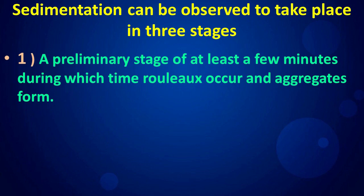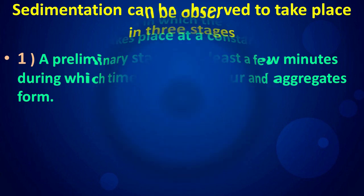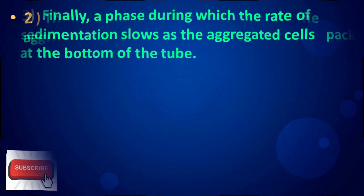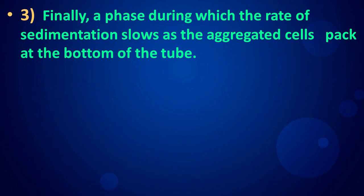Sedimentation can be observed to take place in three stages: a preliminary stage of at least a few minutes during which rouleaux occur and aggregates form; then a period in which the sinking of the aggregates takes place at a constant speed; and finally a phase during which the rate of sedimentation slows as the aggregated cells pack at the bottom of the tube.